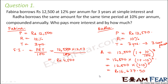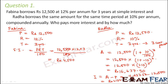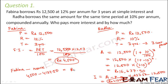But we have to compare the interests. The compound interest is amount minus principal = 16,637.50 − 12,500 = rupees 4,137.50. So this is the interest that Radha has to pay. Comparing both, Fabina pays more interest. The difference is 4,500 − 4,137.50 = rupees 362.50. So Fabina pays more interest than Radha by rupees 362.50.